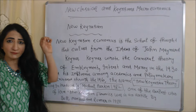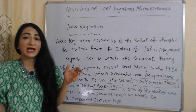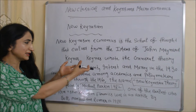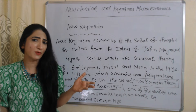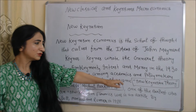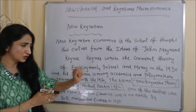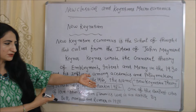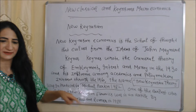New Keynesian economics is the school of thought that evolved from the ideas of John Maynard Keynes. Keynes wrote a book named 'General Theory of Employment, Interest and Money' in 1930, but his influence among academics and policymakers increased through the 1960s. The name 'new Keynesian theory' was introduced by Michael Parkin in 1982. One of the earliest uses of the term was in an article by Mankiw and Romer in 1988.